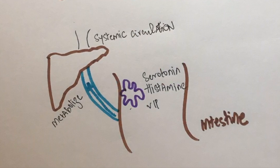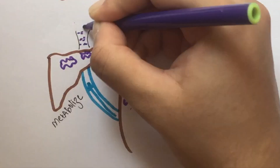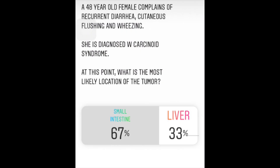When the tumor metastasizes to the liver, its secretions directly reach the systemic circulation. Since our patient is showing symptoms, there is a higher chance of finding the tumor in the liver.